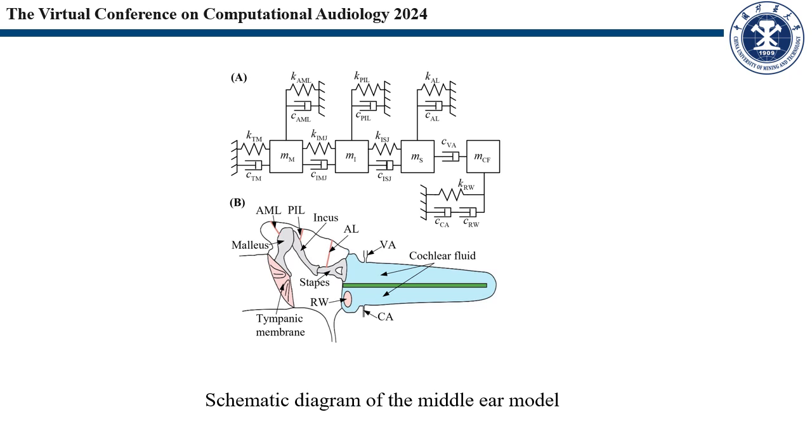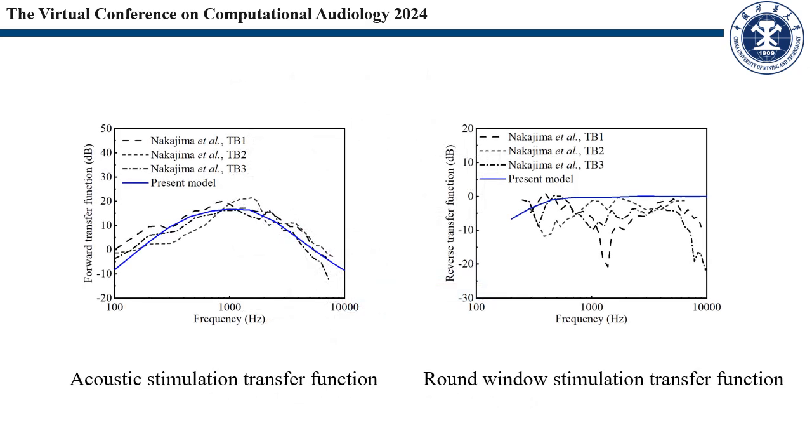The middle ear model is a lumped parameter model in which the ossicular chain was simplified to mass, stiffness, and damping. In contrast to the periphery model, it considers the cochlear third window. Therefore, its results are in good agreement with the experimental data of acoustic stimulation and round-window stimulation transfer functions.